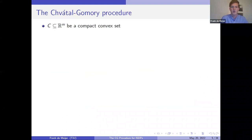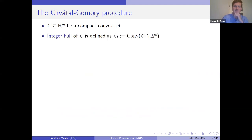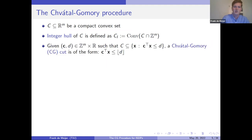Let me give an overview of the Chvátal-Gomory procedure in general. Suppose C is a compact set and we would like to optimize over it restricted to integer points. An important set is the integer hull, which is the convex hull of the intersection of C with all integer points. Ideally we'd like a description of this set, but typically it's unknown. The Chvátal-Gomory procedure relies on so-called CG cuts: suppose we have a vector c with integral entries and scalar d such that C is contained in the half-space induced by c and d. If we have an integral point x, the left-hand side is integral, so we can round down the right-hand side to obtain a stronger cut that still captures all integer points.